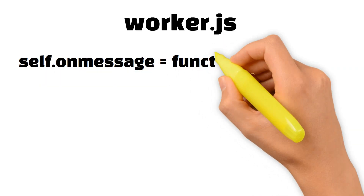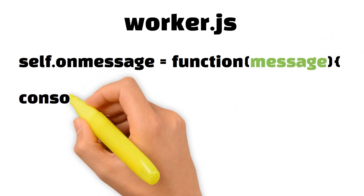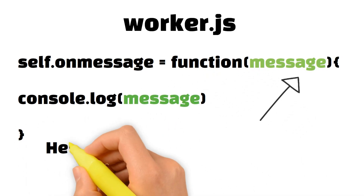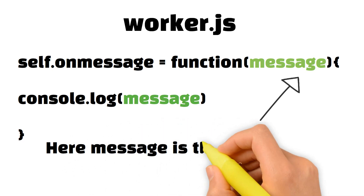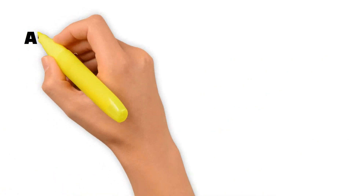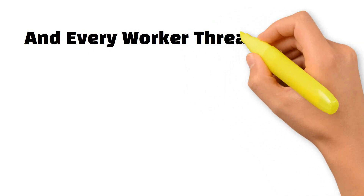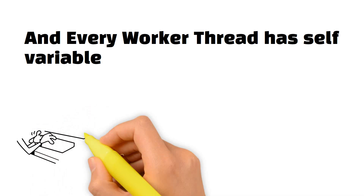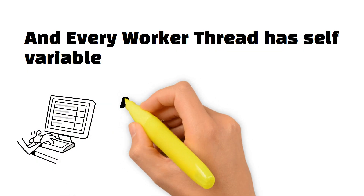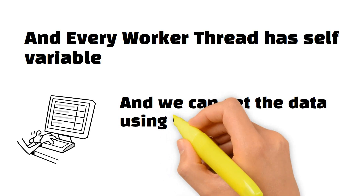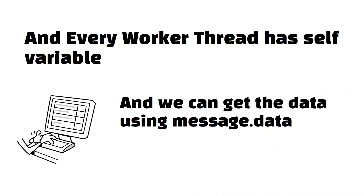Inside your worker.js file, there is a global variable called self. We bind the onmessage event handler to it, so whenever a message is coming from the main UI thread, this handler fires and contains all the information you need to process. You can get the actual value passed by using message.data.